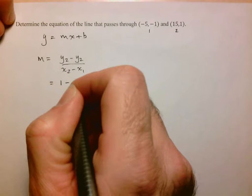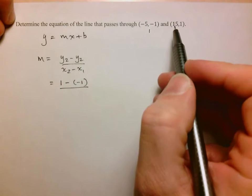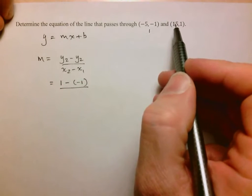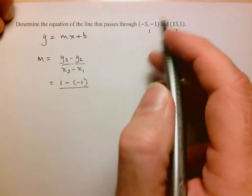So 1 minus negative 1 divided by, so now I have to start with 15, 15 minus negative 5.